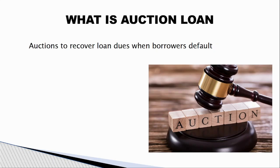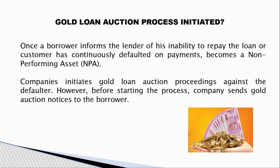The auction process is initiated when the account becomes NPA. Once a customer defaults for three months — 30 days, 60 days, then 90 days — after 90 days the account is categorized as NPA. If the customer continues to default without repaying, the auction process will be initiated.